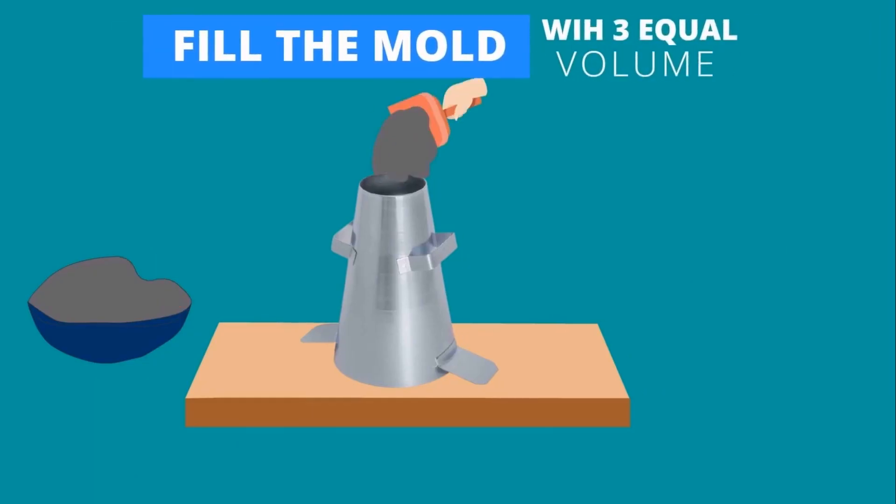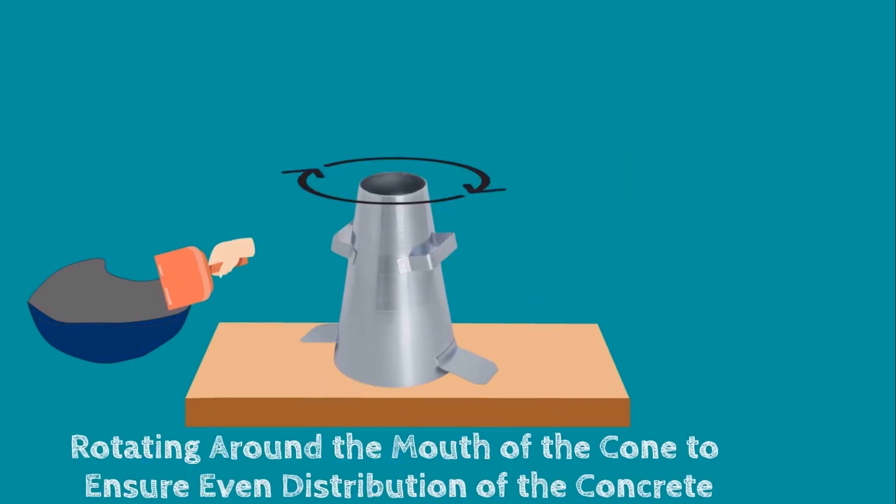Using a scoop, fill the cone in three equal layers by volume, moving the scoop around the perimeter of the cone to ensure an even distribution of concrete.